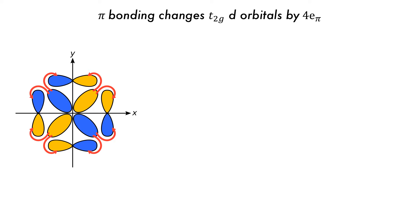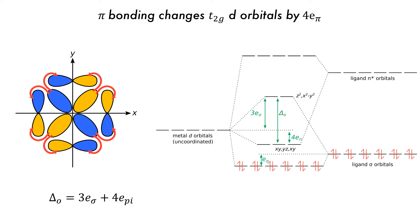Each of the d-orbitals from the t2g set are either stabilized or destabilized by a total of 4 e-pi. This can be determined from the orbital contributions and seen visually as any of the t2g set d-orbitals can interact with up to four different ligand pi-orbitals. Pi-acceptor ligands are stabilized by these interactions, and so delta-O is equal to 3 e-sigma plus 4 e-pi.